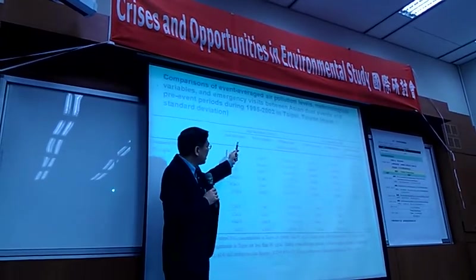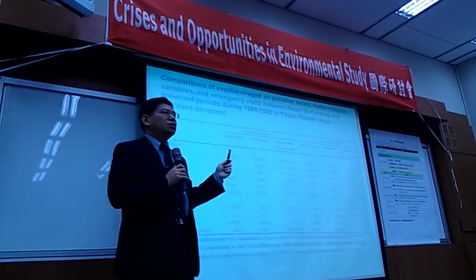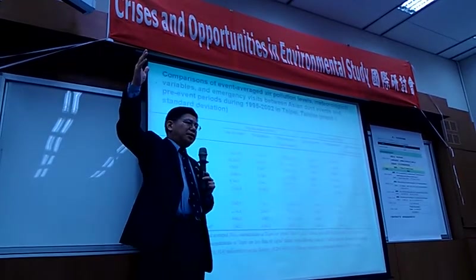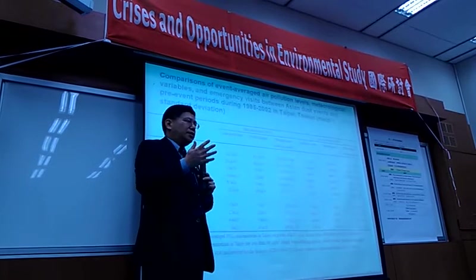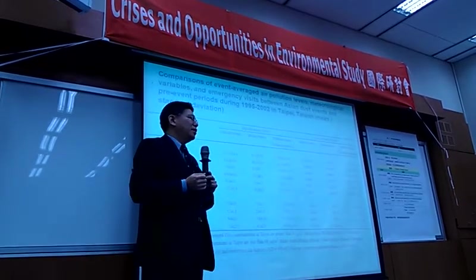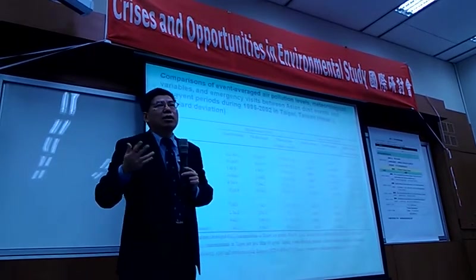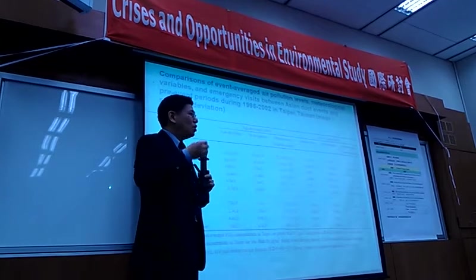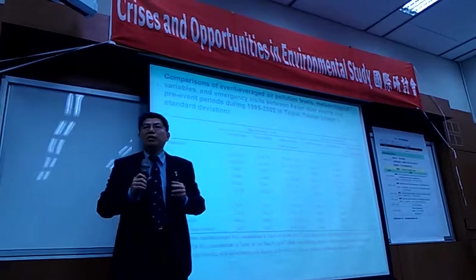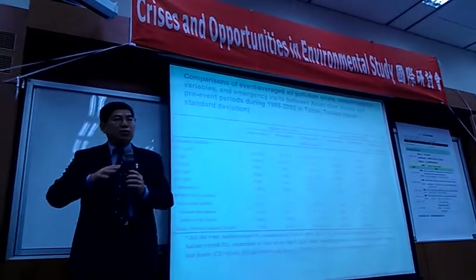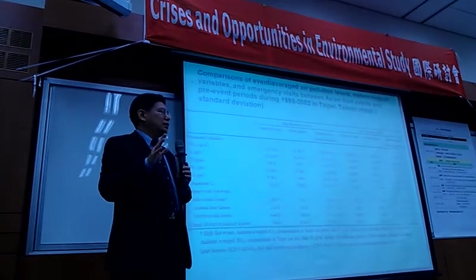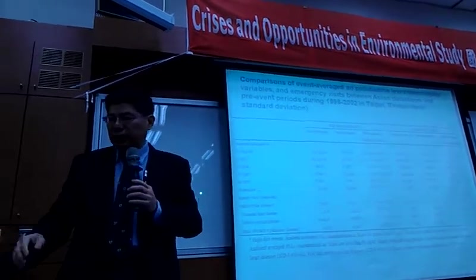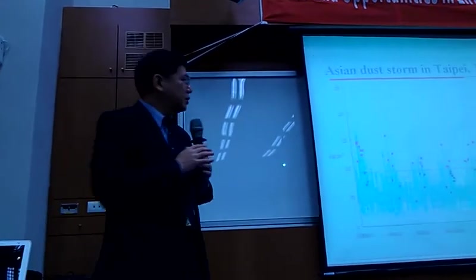We had 39 high dust events and 46 low dust events. Dust traveled about 4,000 kilometers from western China, and when it reached Taiwan there were two possibilities — it affected Taiwan, or because of local meteorological conditions such as rain showers, all the dust was washed out. So you have high dust events and low dust events. Previous studies couldn't distinguish between them. My study showed that only high dust events produce a visible public health impact.